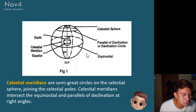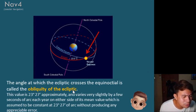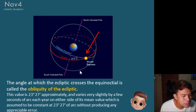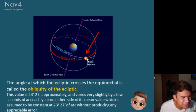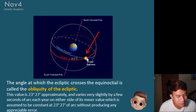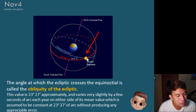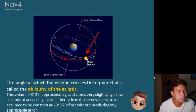The angle at which the ecliptic crosses the equinoctial is called the obliquity of the ecliptic. This value is approximately 23 degrees 27 minutes, and varies very slightly by a few seconds of arc each year on either side of its mean value, which is assumed to be constant at 23 degrees 27 minutes without producing any appreciable error.